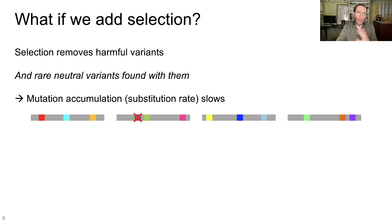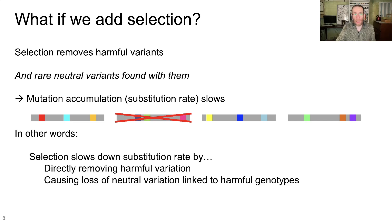Now again, that enough breaks Jensen's math. His math no longer works once that's the case. But it's worse than that, because you can't just take this individual mutation out of the population. It's this individual genome, this individual member of the population as a whole who is not going to pass on their genome as a whole. So you're actually removing all of the variants from that individual from the population, right? So we're removing not just the harmful variants from this population. We're removing the harmful variants and any neutral variants that are found with them that aren't found in anybody else. In other words, selection slows down the substitution rate by directly removing harmful variation and also causing the loss of neutral variation that's linked to those harmful genotypes.